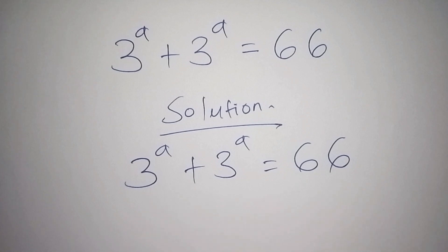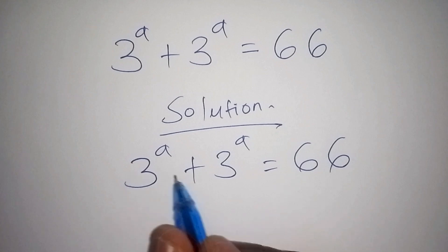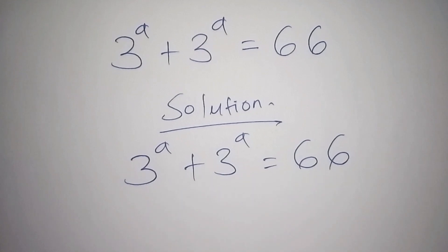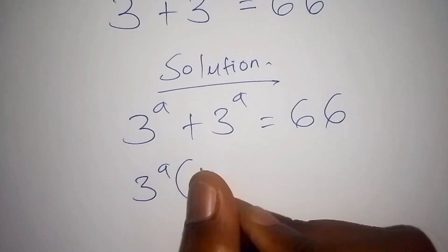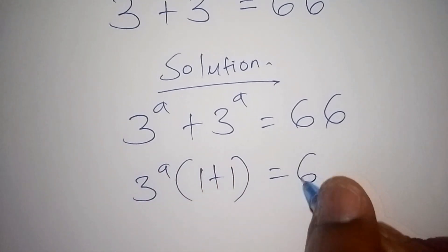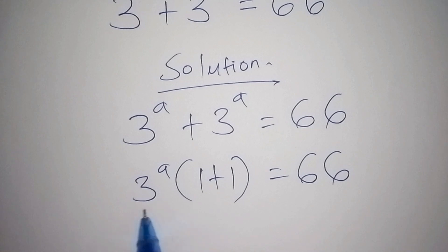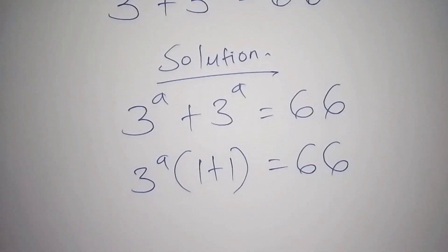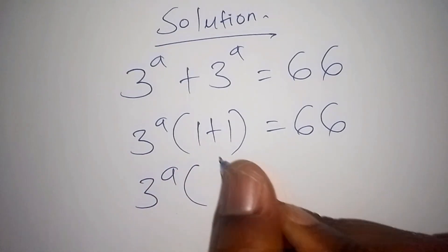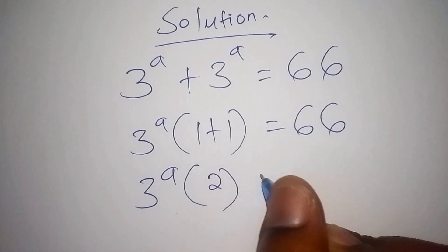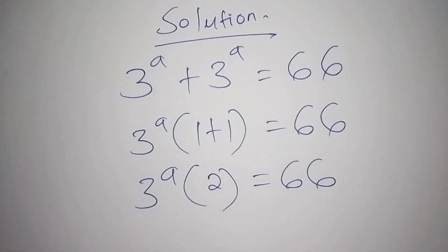The first thing we are going to do, since 3^a plus 3^a is common, we shall factorize it. So we now say: 3^a times (1 + 1) equals 66. Working out the bracket gives us: 3^a times 2 equals 66.